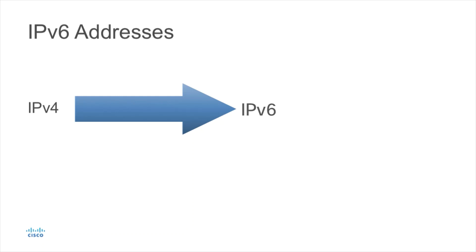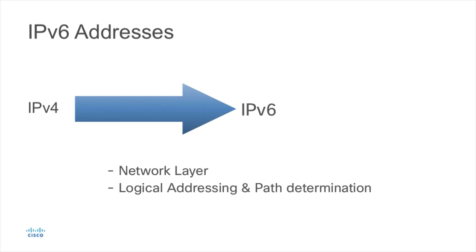There are differences between IP version 4 and IP version 6, but these are both network layer protocols designed for logical addressing and path determination — they do the same thing. However, since IPv6 was developed with the knowledge that we were limited in IP address space, the protocol was redesigned to be even more efficient than IPv4. In other words, we've learned from our mistakes.